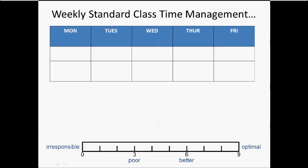Let me show you exactly why that's the case. Let's look at the standard class time breakdown for a common class — we'll say English 101. Your English 101 class, perhaps, is held three times a week. It's a three-credit course held on Monday, Wednesday, and Friday. That means you spend three hours per week in class. After each of those classes, you're going to have writing to do — homework — and that would amount to at least an hour of homework after each of those class days.